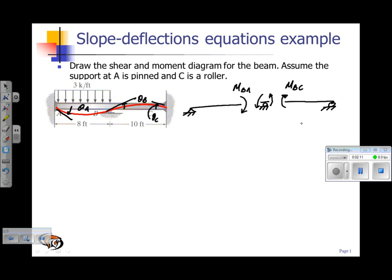One thing to note is the sign convention for the slope deflection equations is slightly different than the static sign convention we are used to. Internal moments for this case have to be positive moments counterclockwise. So after this first step, the next step is to do fixed-end moments.